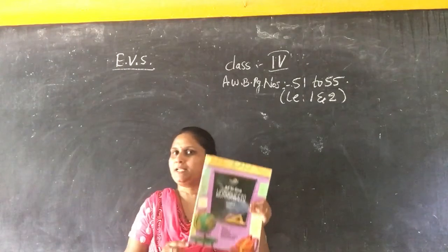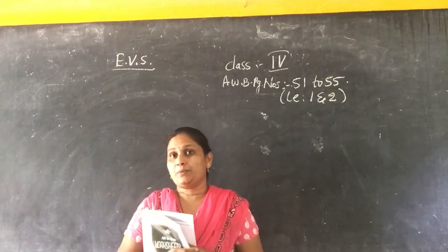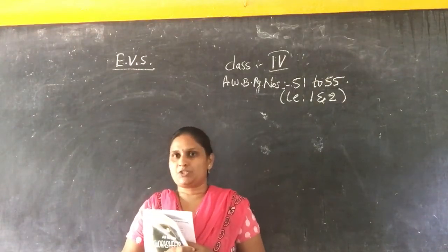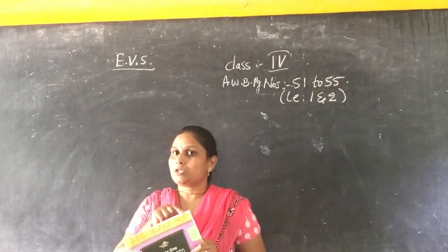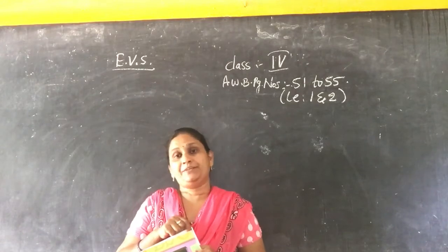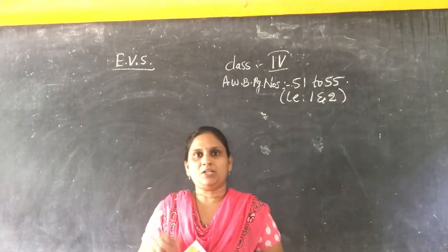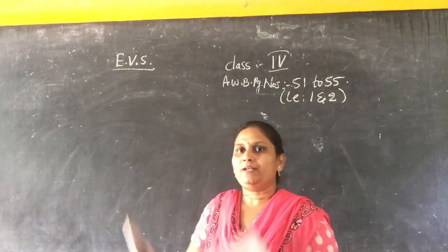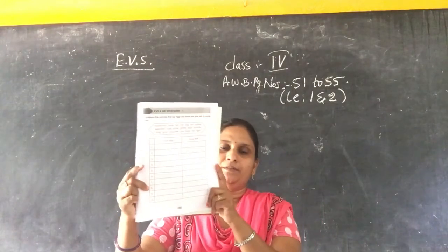Before starting the worksheet, what you have to do is read lesson number 1 and lesson number 2 from the textbook. After reading the lesson only, complete this worksheet. Pages 51 to 55 in the all-in-one worksheet.